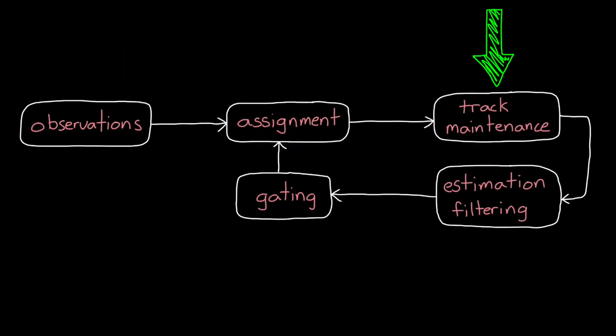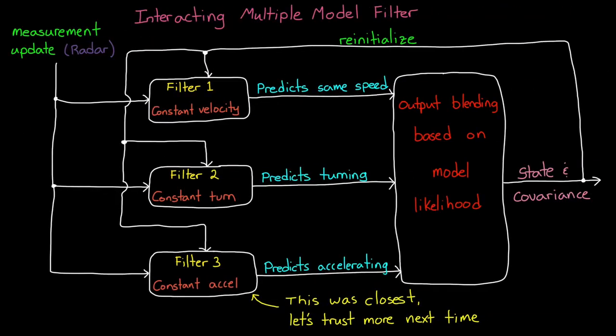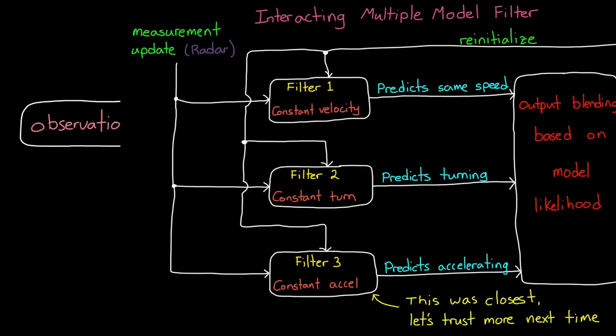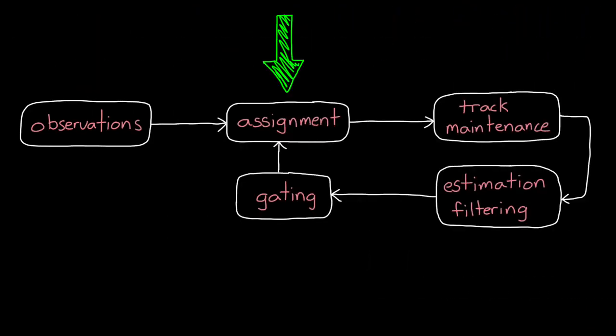So, with the tracks created and removed, and with the observations assigned, we can run a set of estimation filters. And this part is identical to single object tracking, where we had choices like the interacting multiple model filter or the single model common filter. The predicted state of each tracked object that is assigned an observation, and that's both tentative and confirmed objects, they get updated with their respective observation, and then the whole process starts anew. We get more observations, and then they're assigned to tracks, and tracks are created and deleted, and then the filters run again.